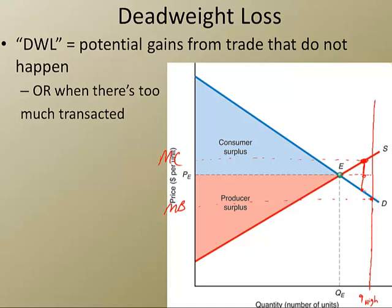So, in this case, if we're producing Q high, the deadweight loss is the area of this triangle right here. This is going to be our deadweight loss. Notice that deadweight loss is always shaped like a triangle.